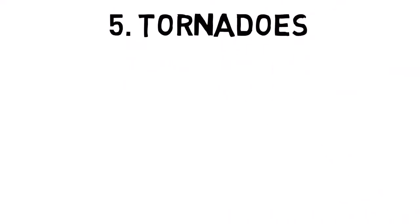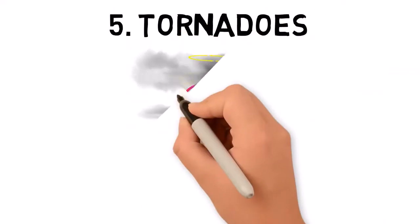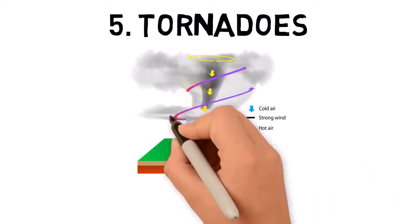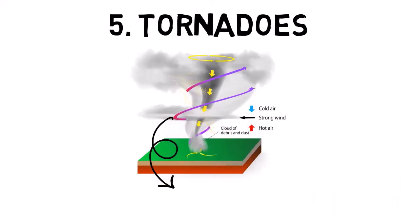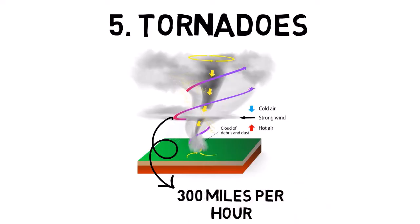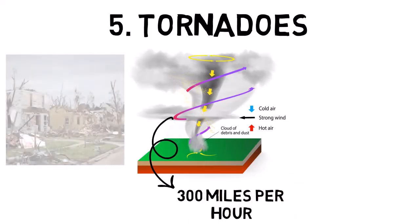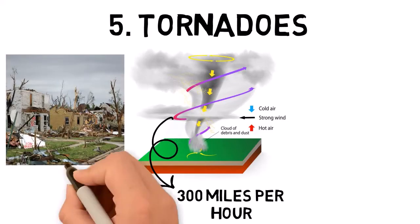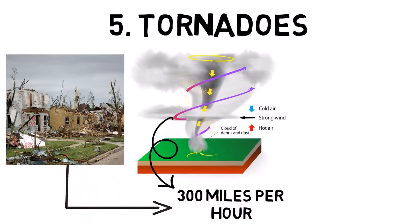Tornadoes are rapidly rotating columns of air that extend from a thunderstorm to the ground. They are capable of immense destruction, with wind speeds that can exceed 300 miles per hour. Tornadoes can uproot trees, destroy buildings, and fling debris over large distances. They are typically short-lived but can be extremely dangerous due to their unpredictability and the speed at which they form.